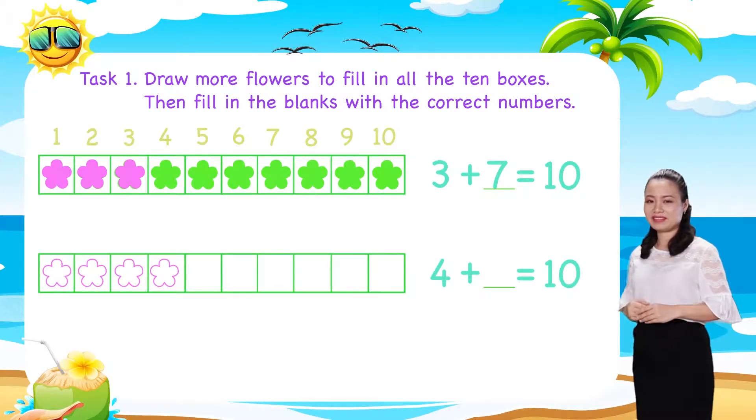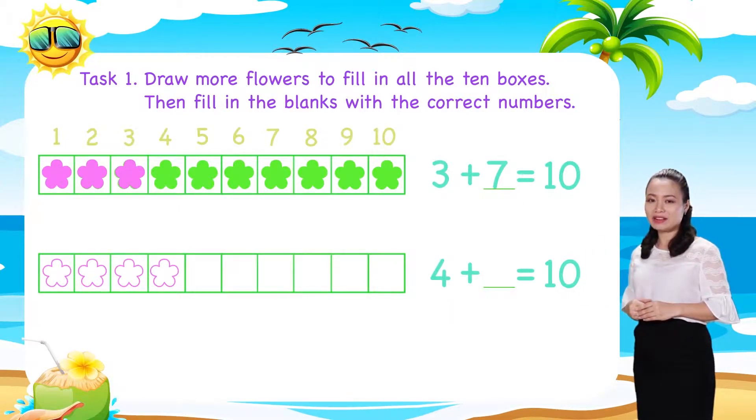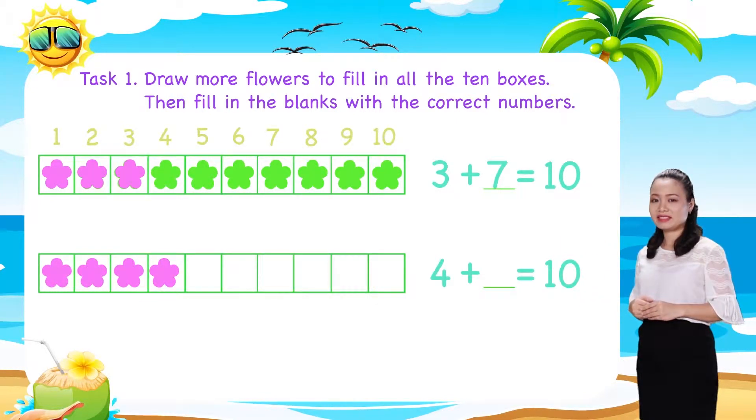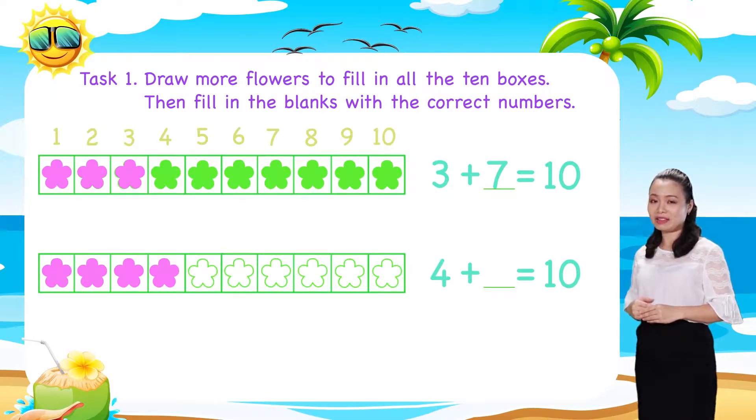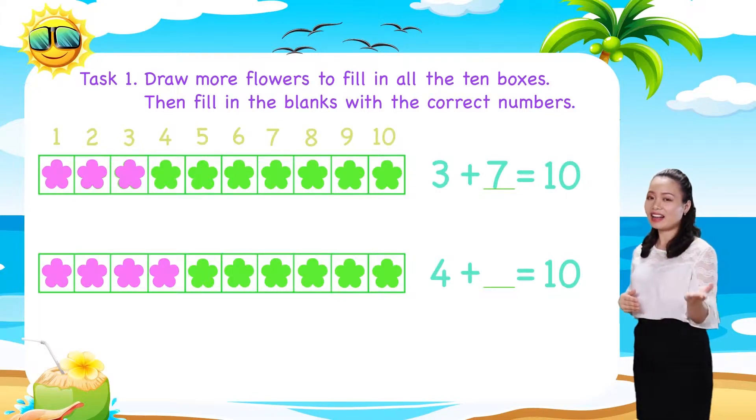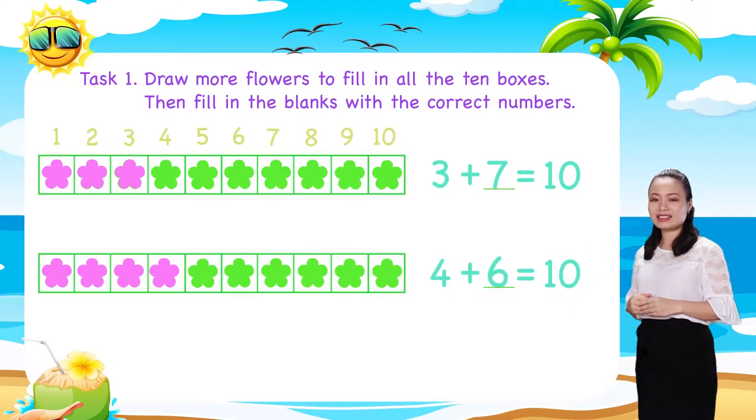Next, the fourth row. Here, we have 4 flowers. Let's colour them pink. 6 boxes are empty. Let's draw 6 more flowers. Colour them green. Thus, we have 4 plus 6 equals 10.